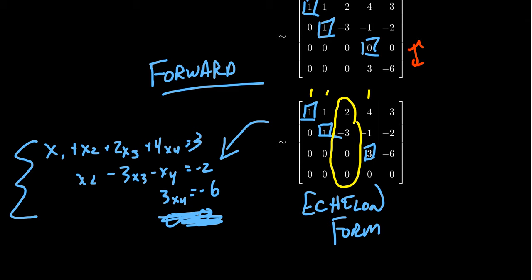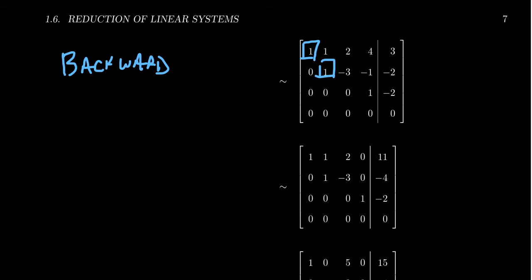So we know the solution set has multiple solutions with one free variable, but it is consistent. Now moving into the backwards phase, we want 1s in the pivot positions. Starting on the right and moving left, we see a pivot at the 3-4 position with a 3 there. So we divide the third row by 3. Fortunately negative 6 is divisible by 3, so the pivot becomes 1 and the last entry becomes negative 2.